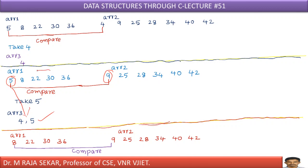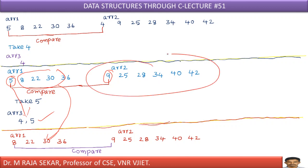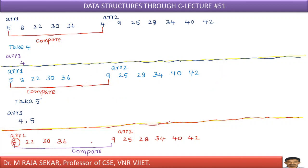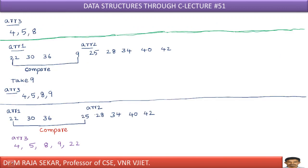Now arr1 advances to the next stage. Comparing 8 with 9 — 8 is the smaller number, so 8 is stored in arr3. Then comparing 22 with 9 — 9 is smaller, so 9 is kept in arr3. Therefore the result so far in arr3 is: 4, 5, 8, 9.